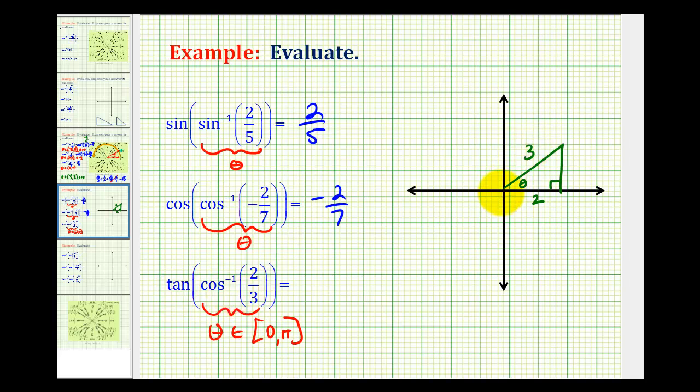You know tangent theta is equal to the ratio of the opposite side to the adjacent side, so for this problem we do have to determine the length of this side of the triangle, and we can do that using the Pythagorean Theorem. Y squared plus two squared must equal three squared. So y squared plus four must equal nine, so y squared equals five. If we square root both sides of the equation, we know the y value must be positive, so we have y equals square root five.